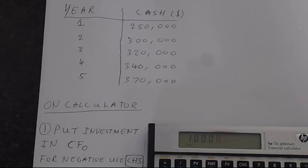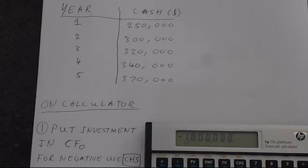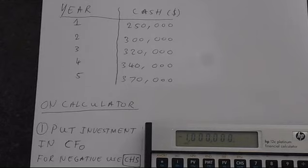So we put in one million. These commas will help you get it right. And we need to change the sign because this is negative. Don't use the negative key. Use the CHS button always. And then put this into the cash flow zero.